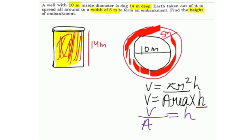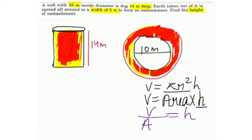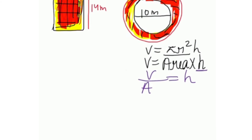First we will find the volume. The earth that was dug out is spread around the well to form the embankment. Since it is the same earth matter, the volume of the embankment equals the volume of earth dug out. So we will calculate the volume of the well.